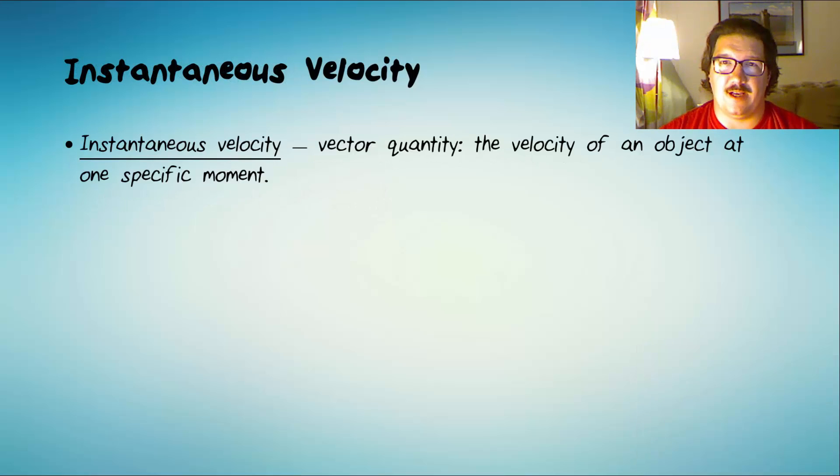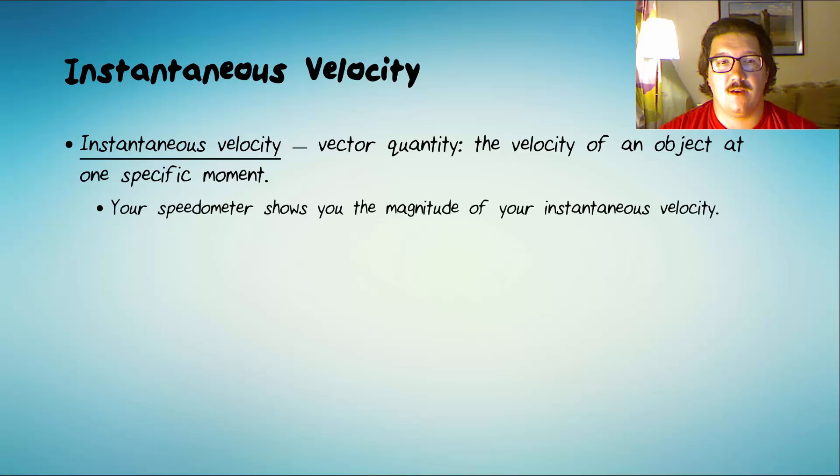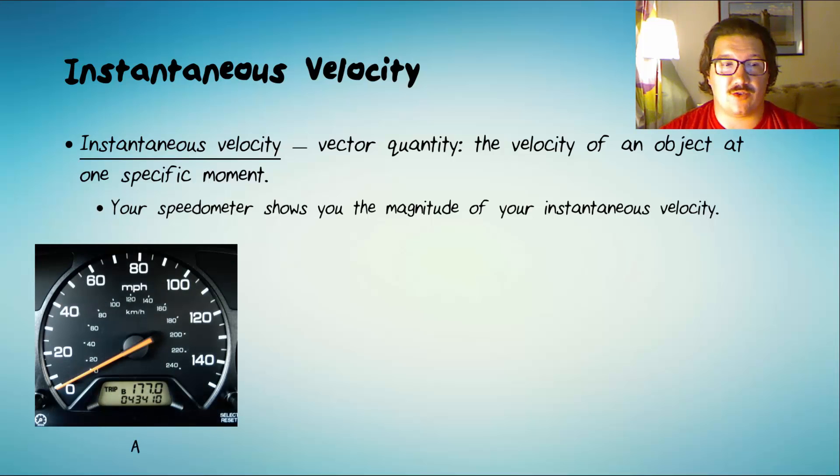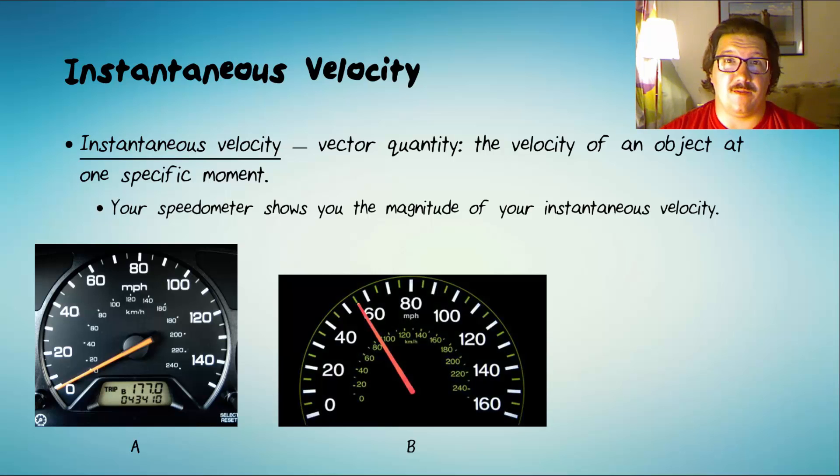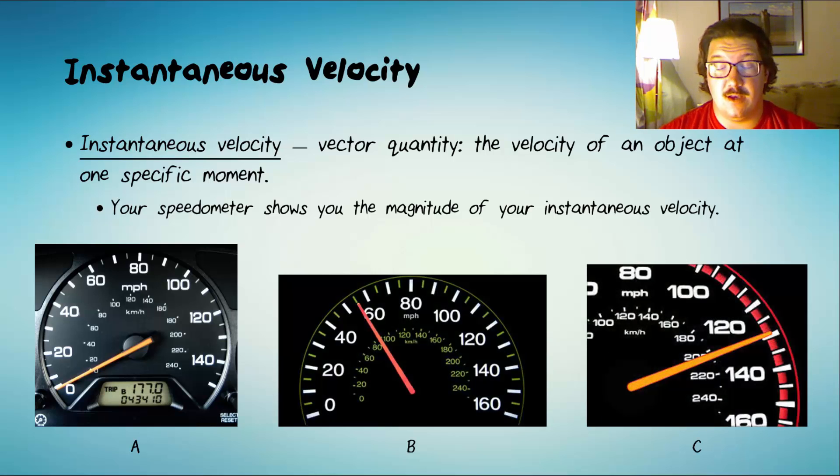Instantaneous velocity is the velocity of an object at one specific moment. The speedometer in your car shows you your instantaneous velocity. For instance, car A at this moment is traveling 0 miles per hour, car B at this moment is traveling 55 miles per hour, and car C is traveling 130 miles per hour. So we know at these specific moments how fast the cars are going, but we don't know if these cars are in the process of speeding up or slowing down. All we know is what's happening at this one very specific moment.